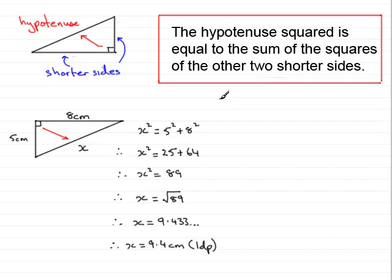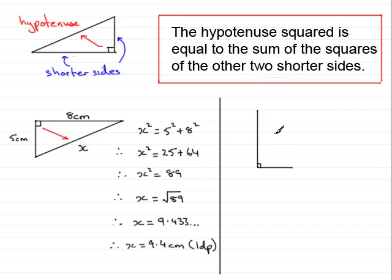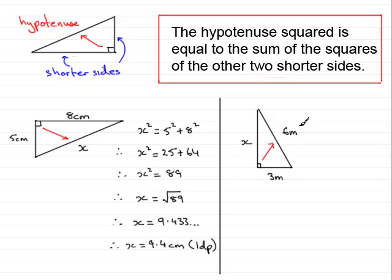Let's try another example. Suppose we have a triangle like this — remember, it must be a right-angled triangle. We've got a right angle in here. Let's suppose that this length here is 6 meters and this length here is 3 meters, and we're asked to find this length over here, x. Now in this triangle, where is the hypotenuse? The hypotenuse is the side opposite the right angle, so that would be this side, the 6 meters.